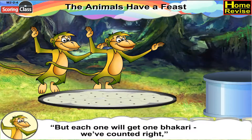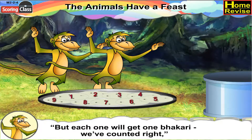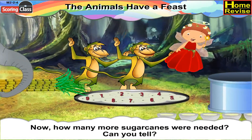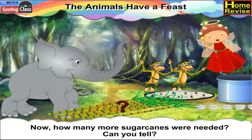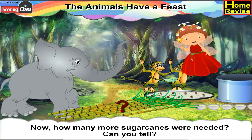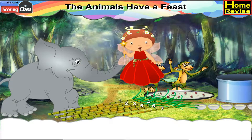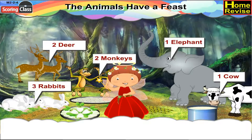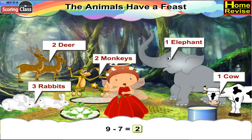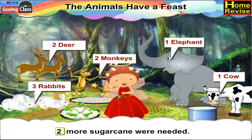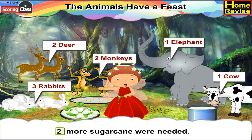But each one will get one bhakri — we have counted, right? Now, how many more sugar canes are needed? Can you tell? Well, there were seven sugar canes and nine animals. So, nine minus seven makes it two. Which means two more sugar canes are needed.